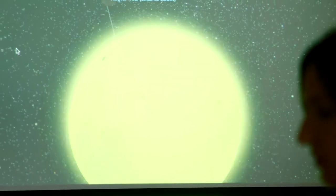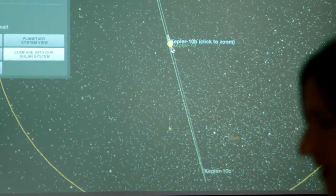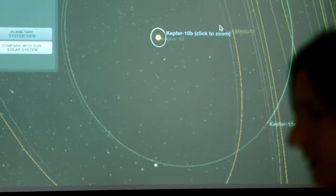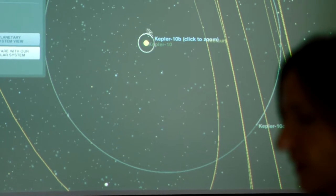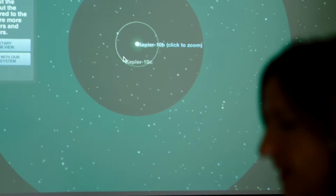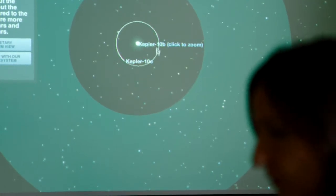This planet is so close to the star, it's unbelievable. If we can overlay our solar system, our solar system actually, that's Mercury's orbit. Look how close this planet is to the star here. It is so close to the star. This planet, Kepler-10b, it's so close to the star.